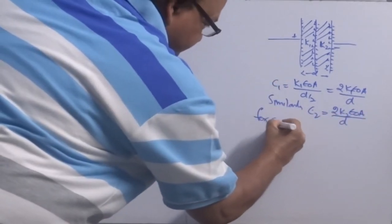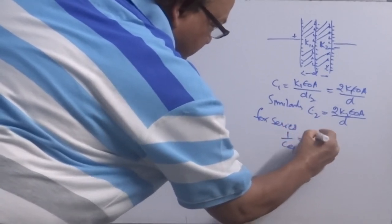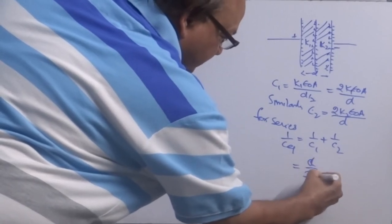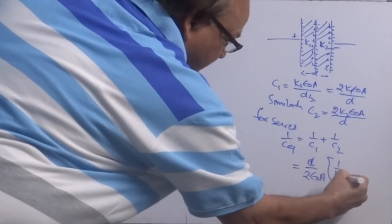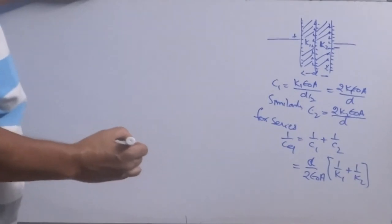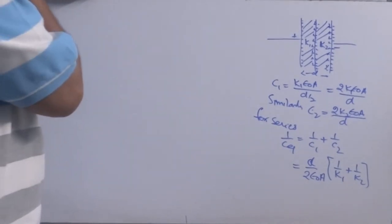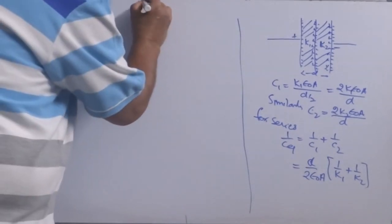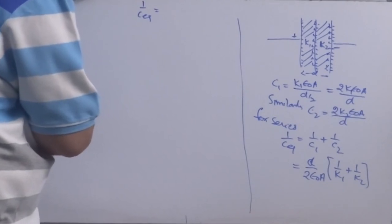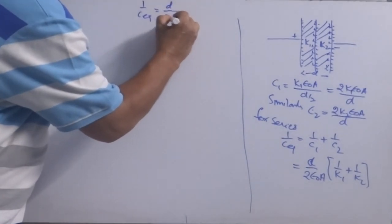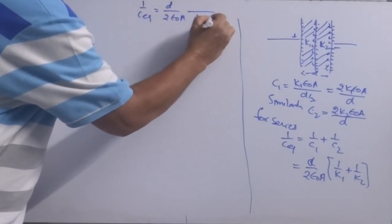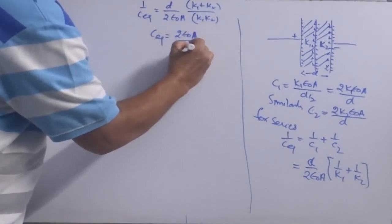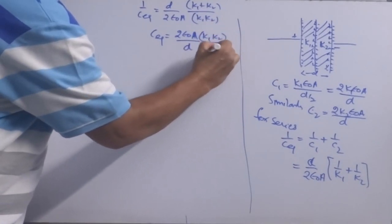For the series combination: 1/C_eq = 1/C1 + 1/C2 = D/(2ε₀A) × (1/K1 + 1/K2) = D/(2ε₀A) × (K1 + K2)/(K1K2). Therefore C_eq = 2ε₀A/D × K1K2/(K1 + K2).